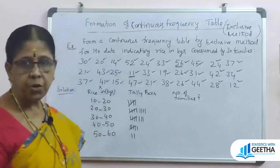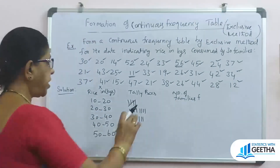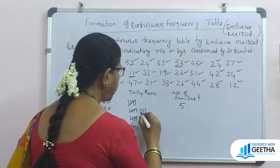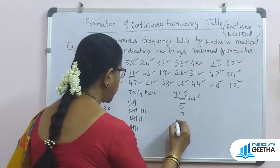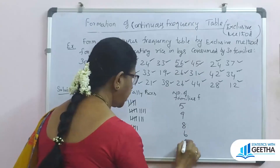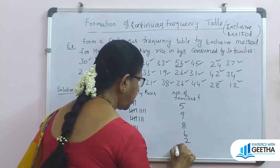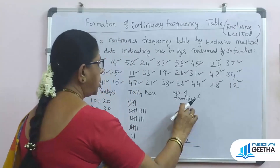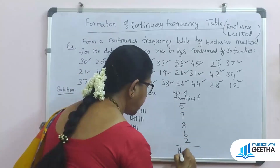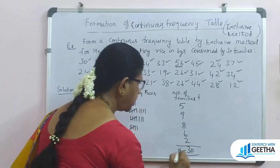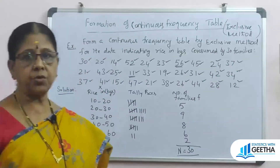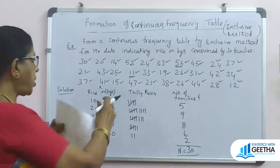Now we count the frequencies. Here is 5, here is 5, here is 5 plus 4 equals 9, here is 5 plus 3 equals 8, here is 6, here is 2. Total: 9 plus 5 is 14, plus 8 is 22, plus 8 is 30. So n equals 30. This is the exclusive method.